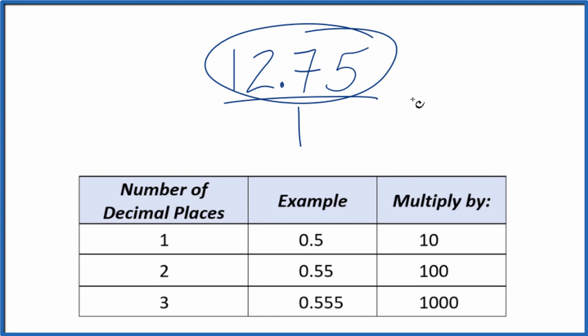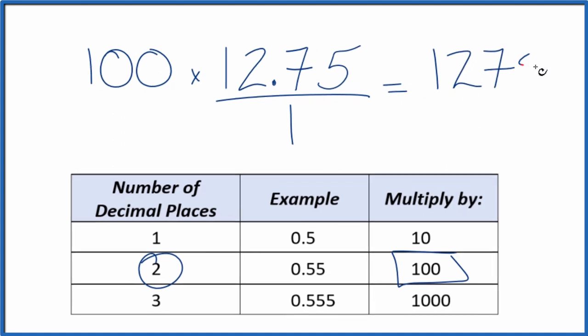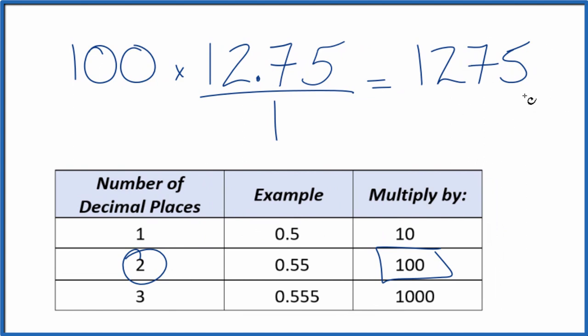We need to get the numerator to be a whole number, and since we have two decimal places, we could multiply this times 100, that would give us a whole number. So 100 times 12.75, that equals 1,275. So that gives us our whole number.